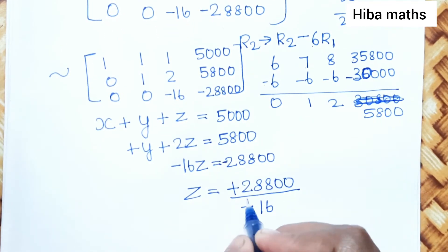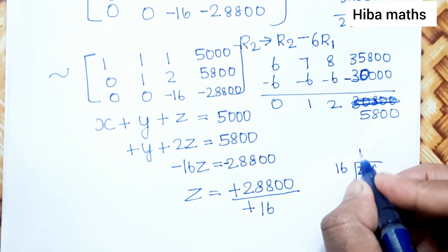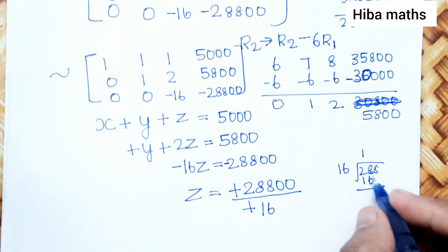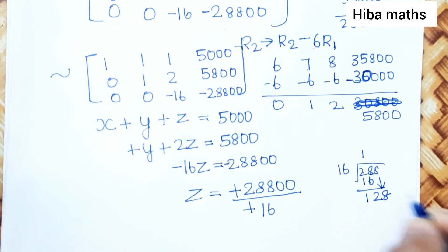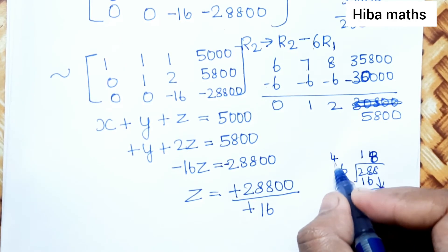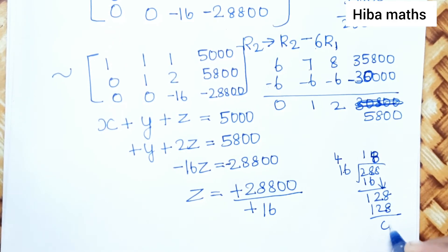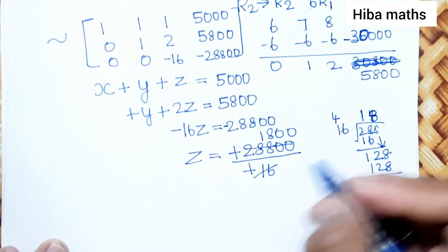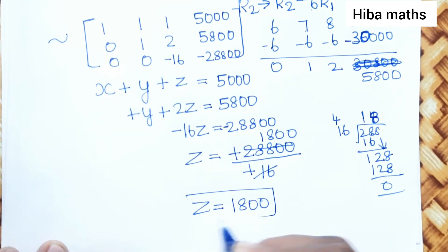The negatives cancel. We calculate 28800 divided by 16: 16 goes into 288 giving 18, so 28800 divided by 16 equals 1800. Therefore Z equals 1800.